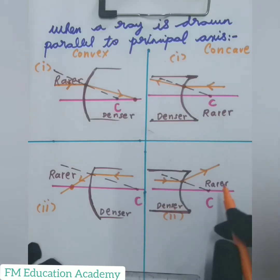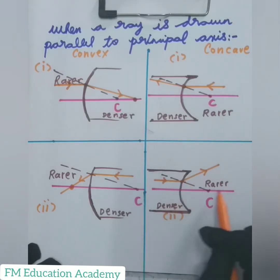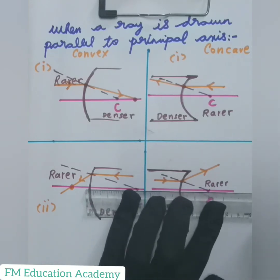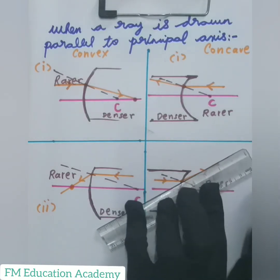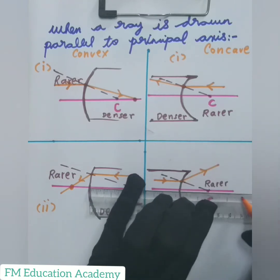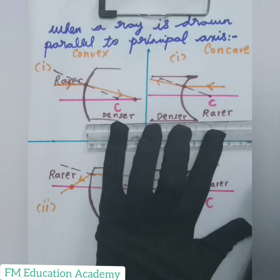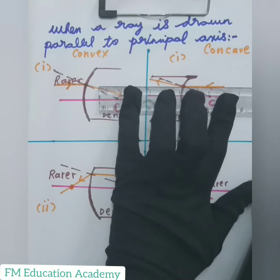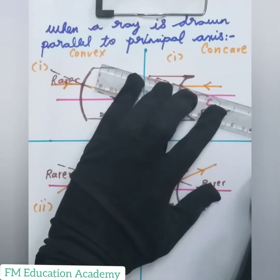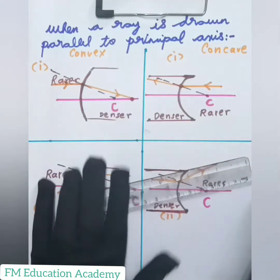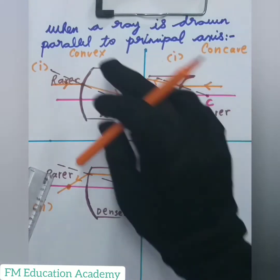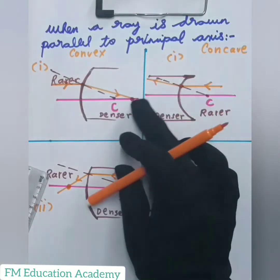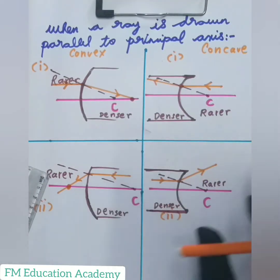Remember, in a concave surface after refraction, the ray will not meet on the principal axis. We can see a ray parallel to the principal axis bending away from the normal and not meeting the principal axis, and similarly bending towards the normal but still not meeting the principal axis. So in a concave surface the ray does not meet a point on the principal axis, whereas in a convex surface the ray does meet a point on the principal axis.